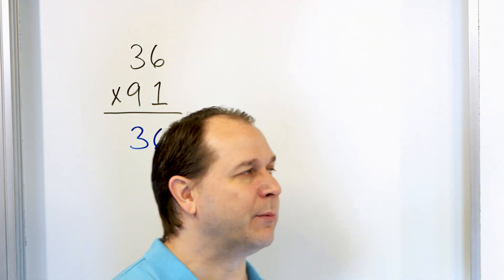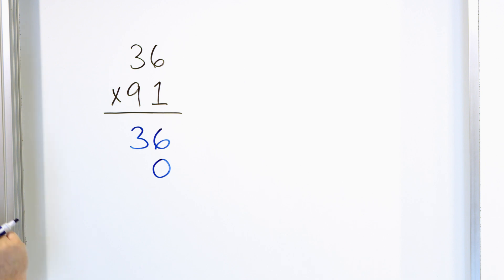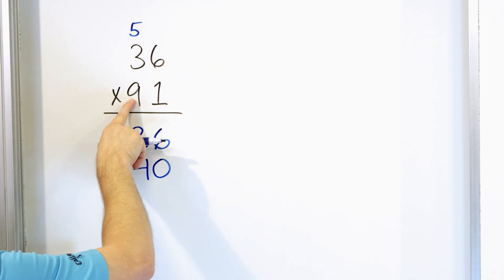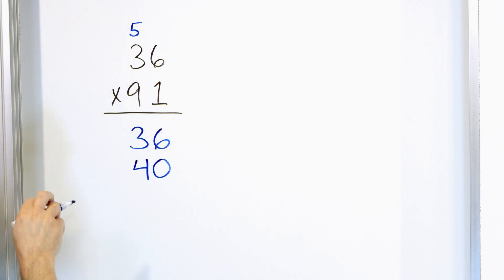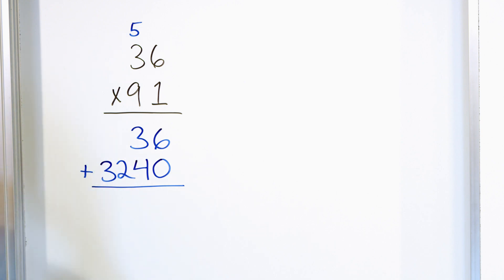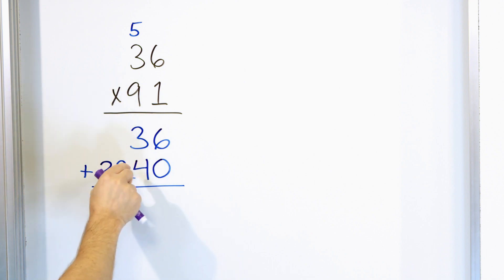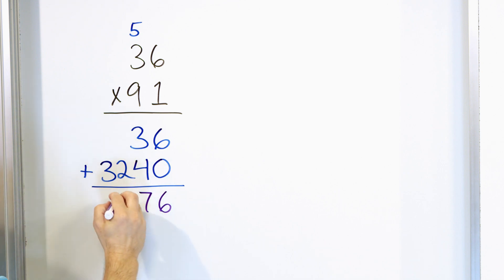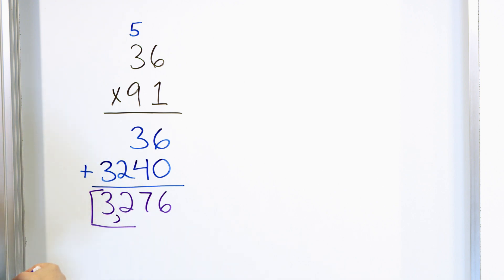So we drop a zero because we're really multiplying by 90 essentially. Nine times six is 54 — put the four down here and carry the five. Now nine times three is 27, then we add the five to get 32. So we write 32 down here. Now we add these numbers together: six plus zero is six, four plus three is seven, two plus nothing is two, and three plus nothing is three. The answer we get is 3,276. Circle that as your final answer.